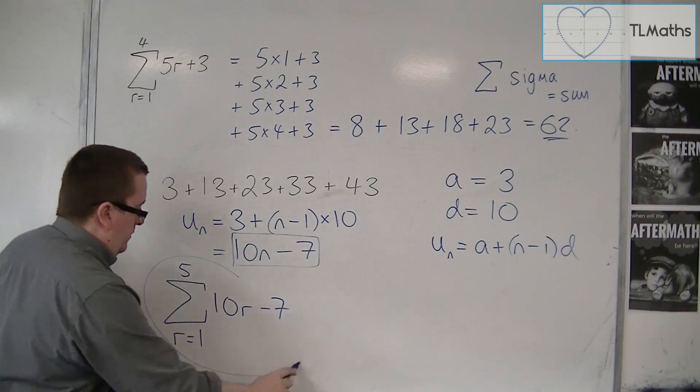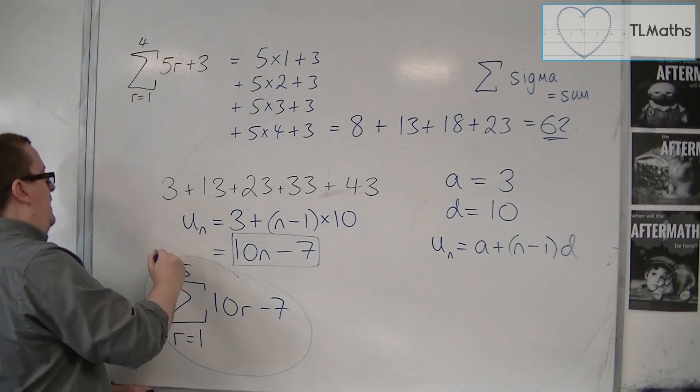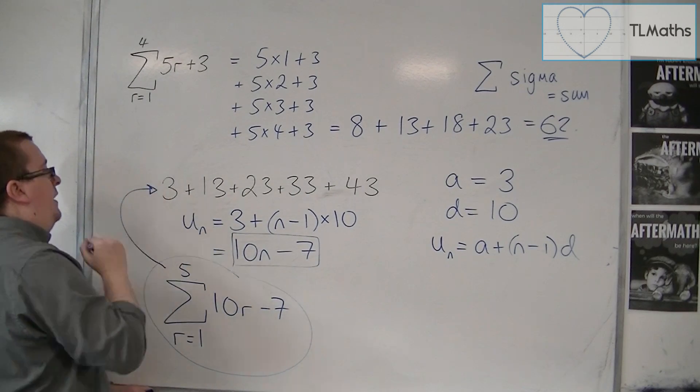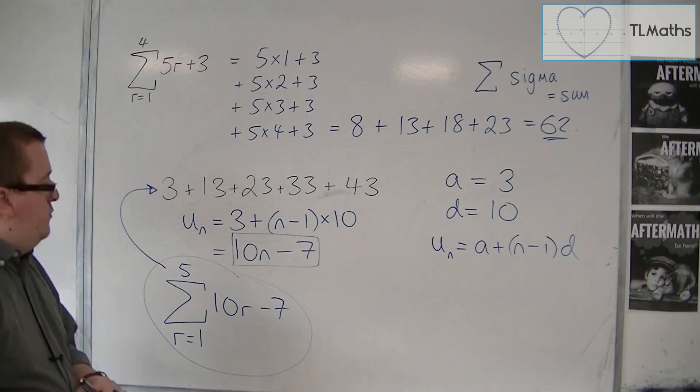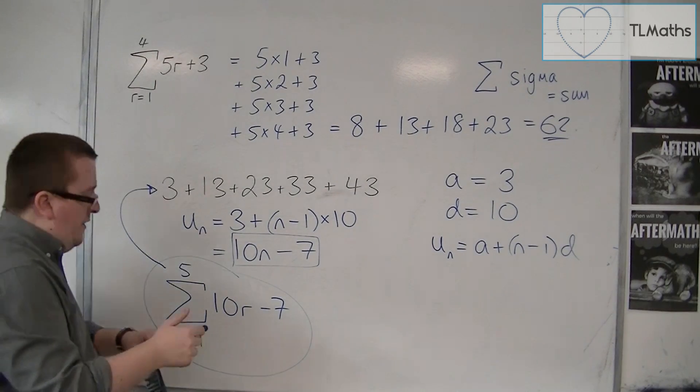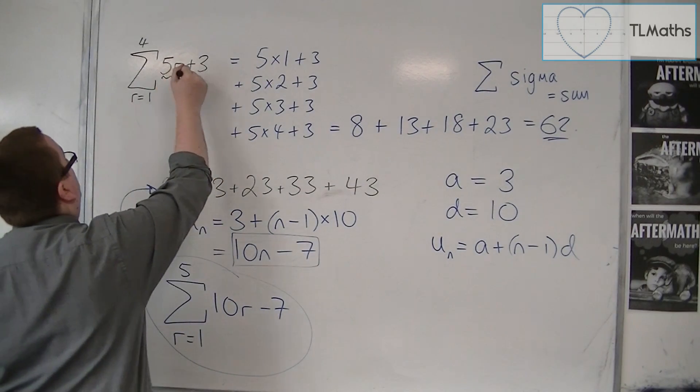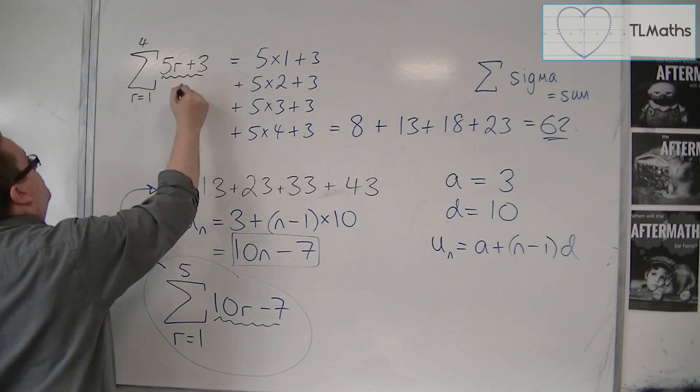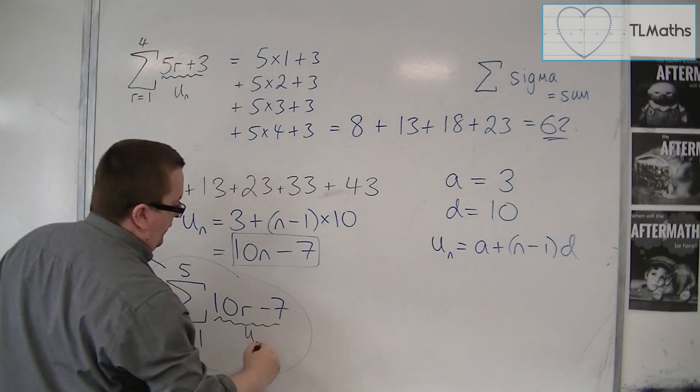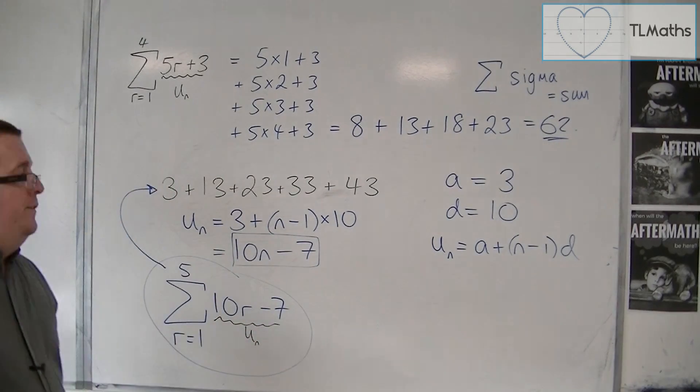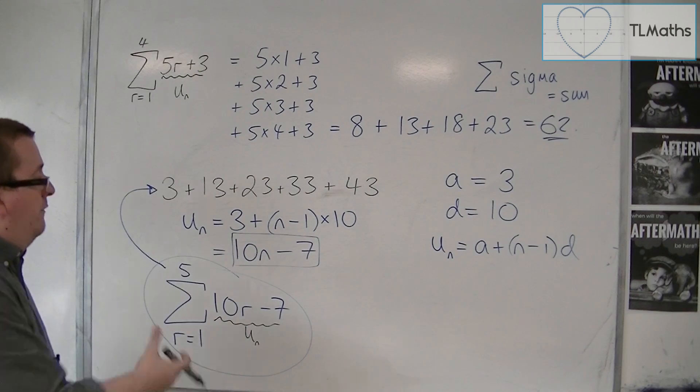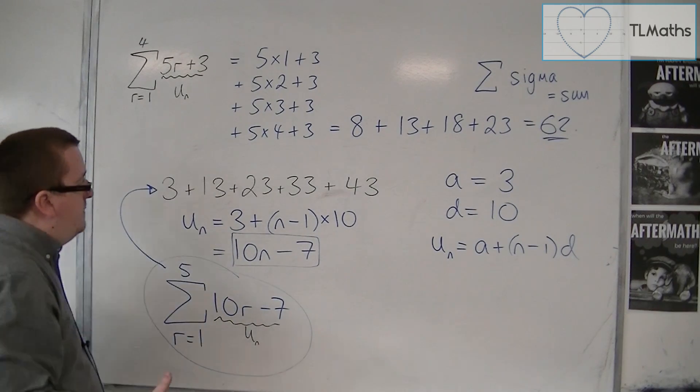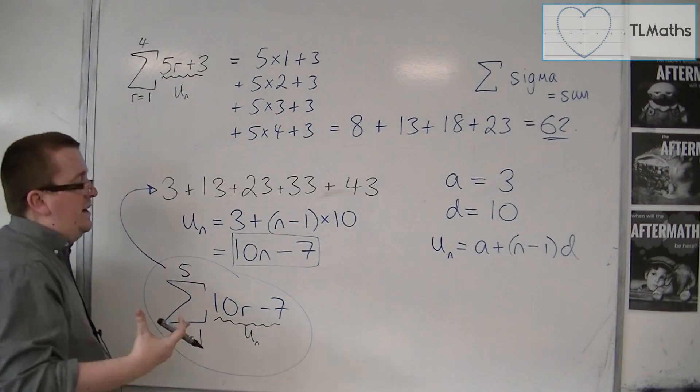So this sigma notation represents this arithmetic series. So this bit here, that is in front of the sigma, always represents the nth term of the series, of the sequence rather. So it is always the nth term.